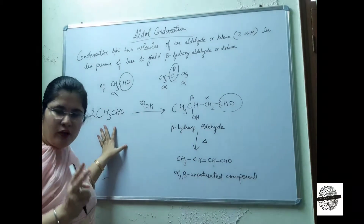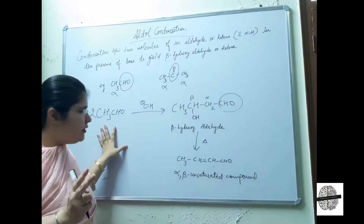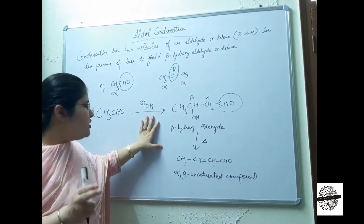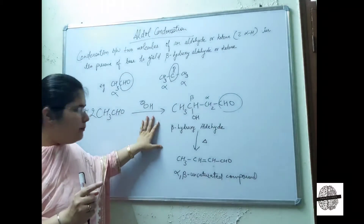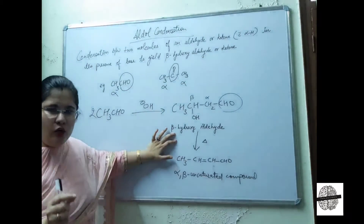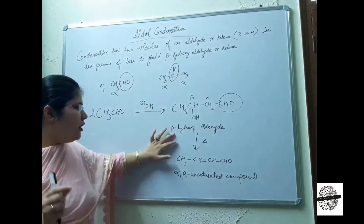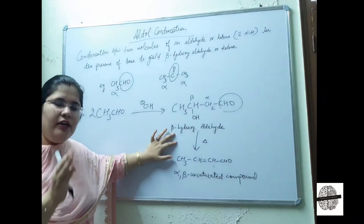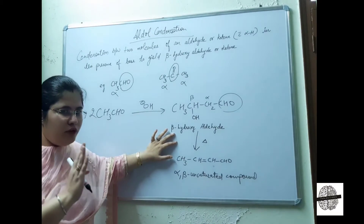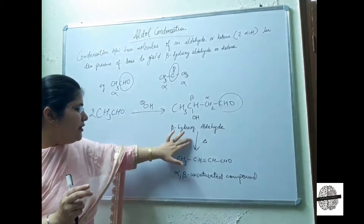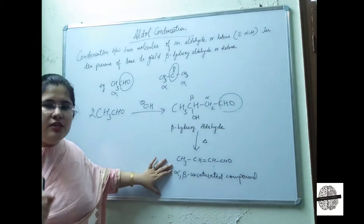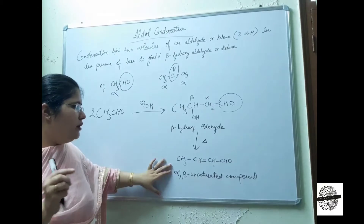When we take two molecules of aldehyde, the OH negative ion attacks them and we form a beta-hydroxy aldehyde — in the case of aldehydes — or a beta-hydroxy ketone in the case of ketones. Then dehydration takes place and we get an alpha-beta unsaturated compound.